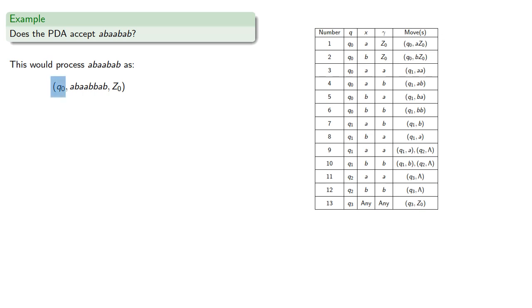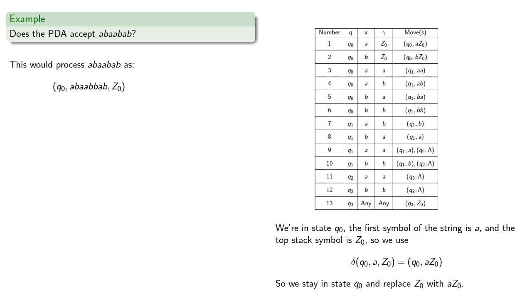Now we're in state q0, the first symbol of the string is a, and the top stack symbol is Z0, so we use the delta transition. In other words, we're going to stay in state q0 and replace the end-of-stack symbol Z0 with a, Z0.